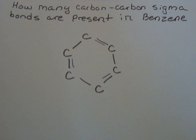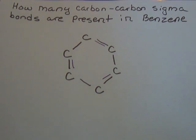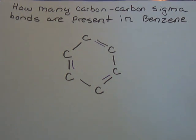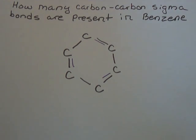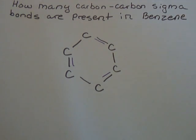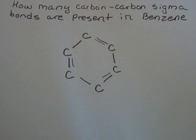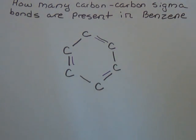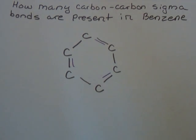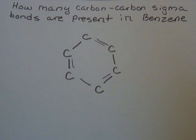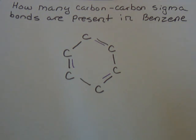Now they're asking us to find how many sigma bonds are present. Sigma bonds, I like to think of them as sort of like single bonds. And then the double bond would be considered like the pi bond. So we're looking for how many single bonds there are.